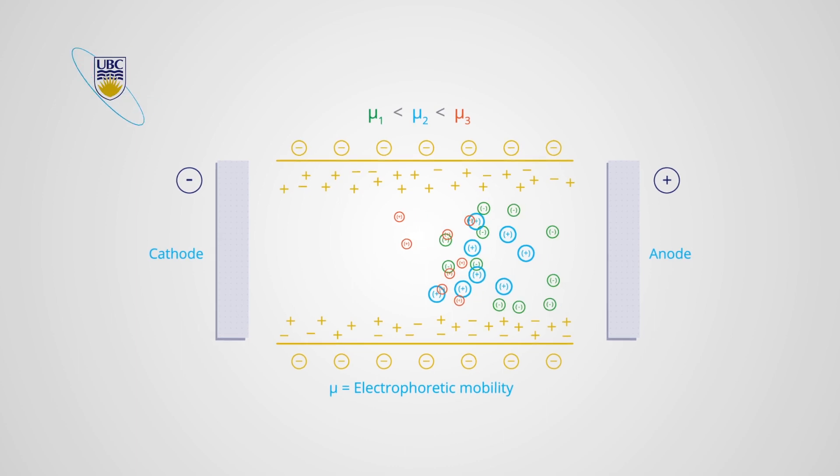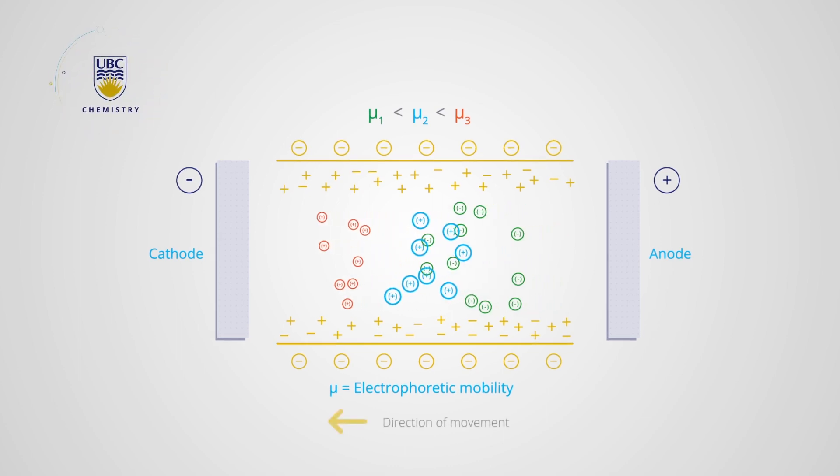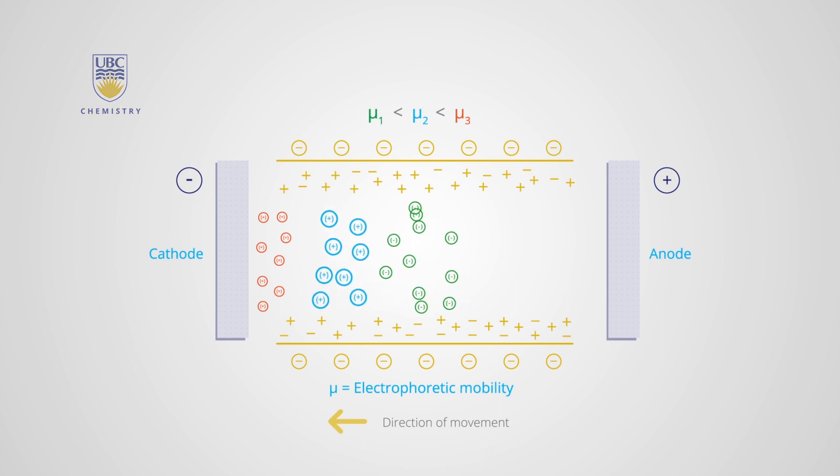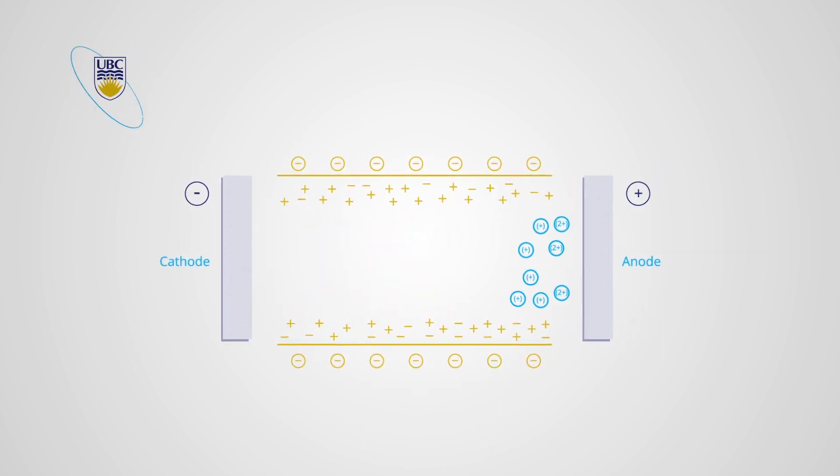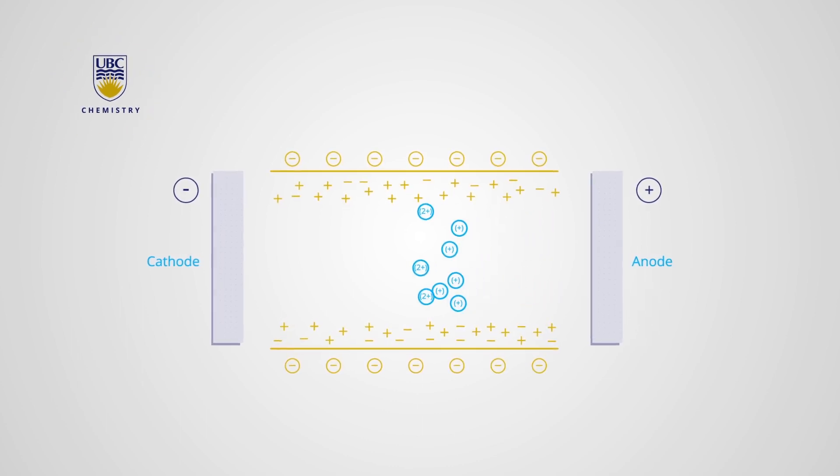Separation of the sample's components is based on their electrophoretic mobility. Those that have a higher electrophoretic mobility constant will move through the capillary faster. The electrophoretic mobility constant of each component is dependent on its charge and size.